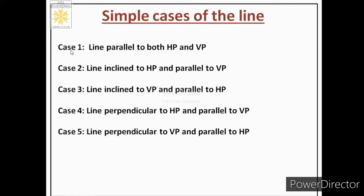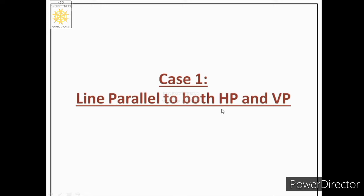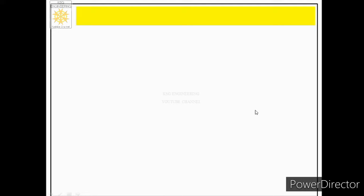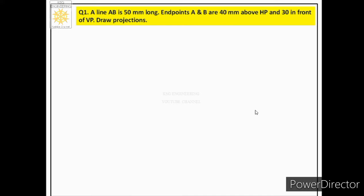Case 1: line parallel to both horizontal and vertical planes. Statement — a line AB is 50 mm long; points A and B are 40 mm above HP and 30 mm in front of VP. Since both words 'above HP' and 'in front of VP' are used, the quadrant is first. Both end points are at the same distance from HP, so the line is parallel to HP. Both end points are at the same distance from VP, so the line is parallel to VP.